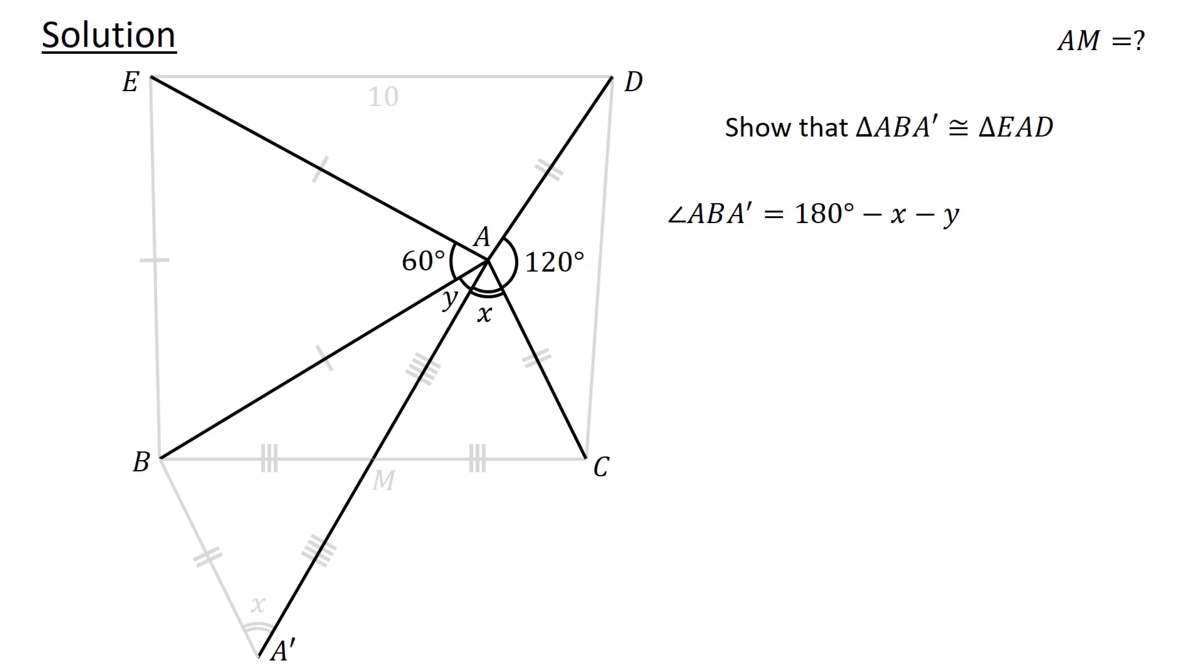Next, let's express angle EAD, which is this angle, in terms of X and Y. Given that the angles at a point sum to 360 degrees, we have angle EAD plus 120 degrees plus X plus Y plus 60 degrees equals 360 degrees. Therefore, angle EAD equals 180 degrees minus X minus Y.